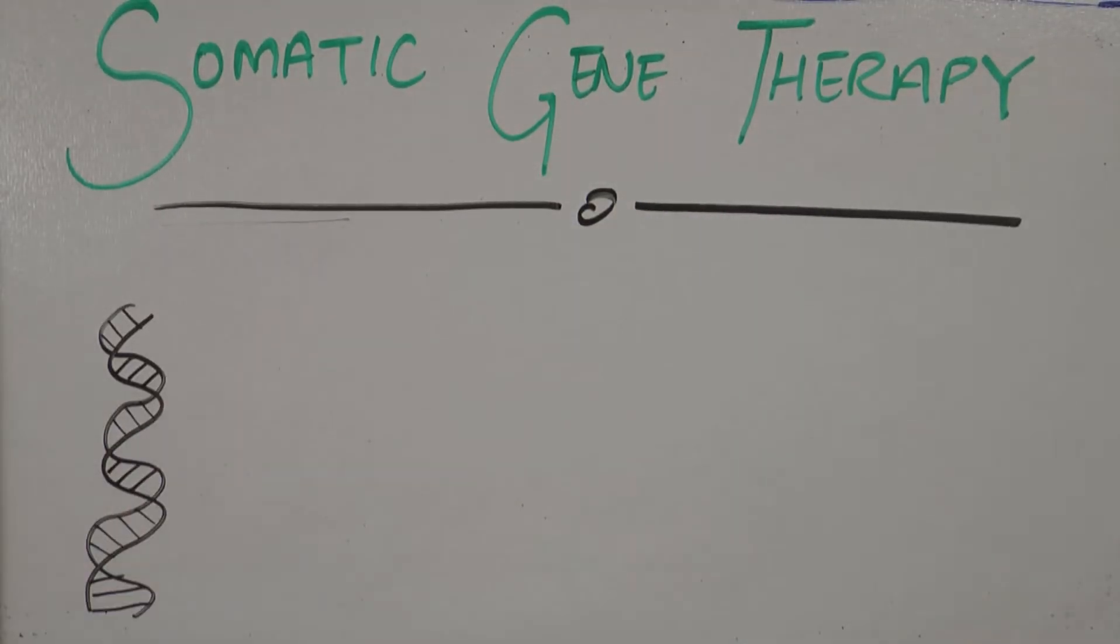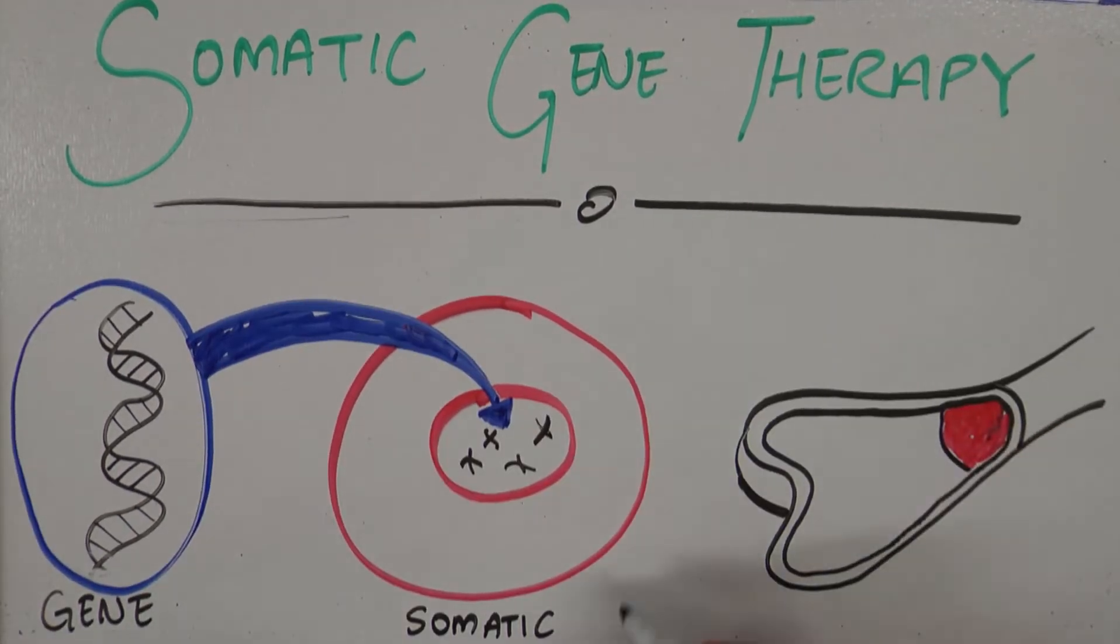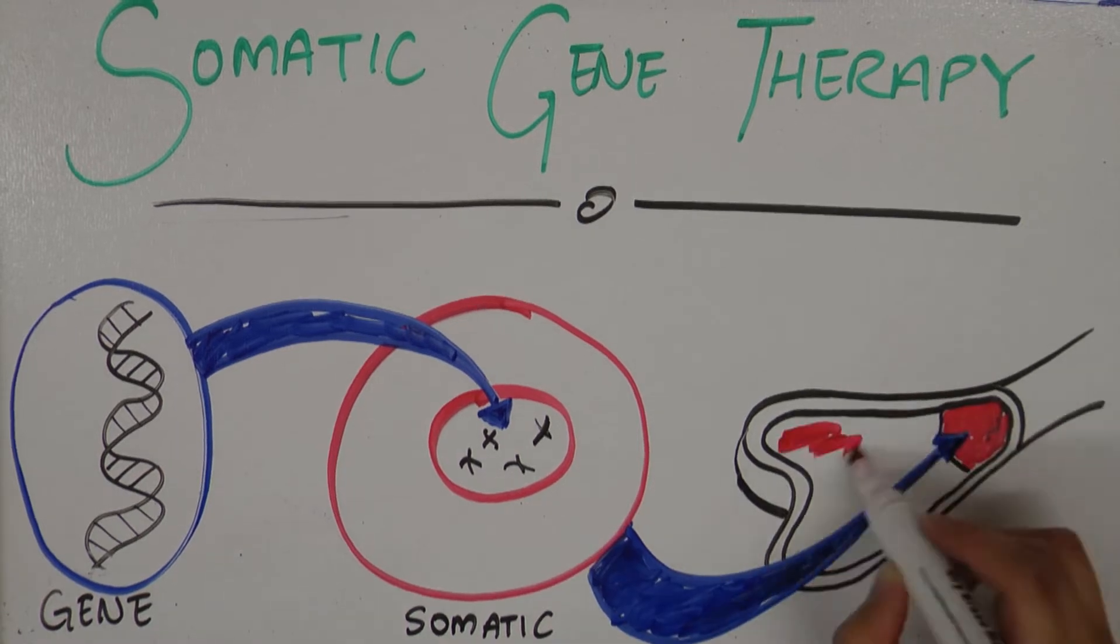Somatic gene therapy is the transfer of genes into somatic cells of a patient, such as the insertion of genes into the bone marrow, manipulating T cells to fight Leukaemia.